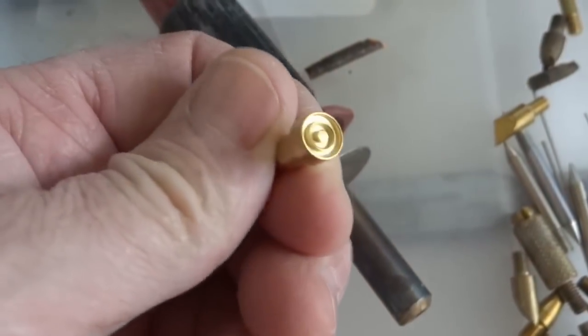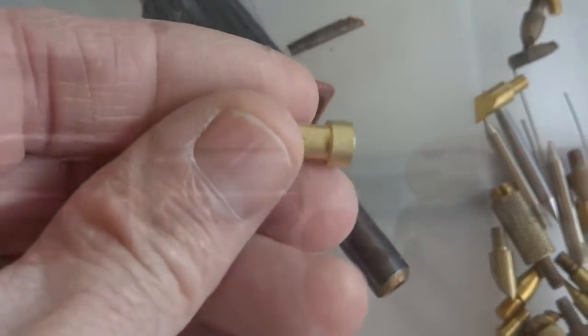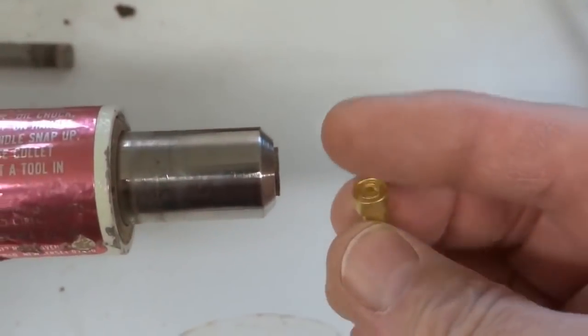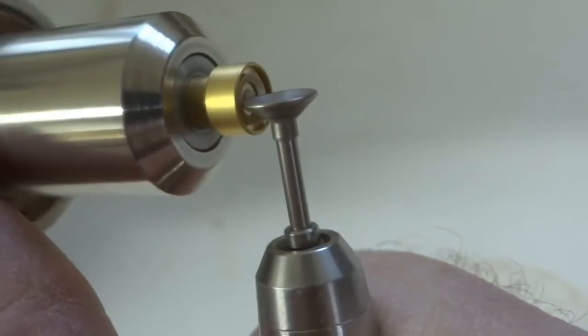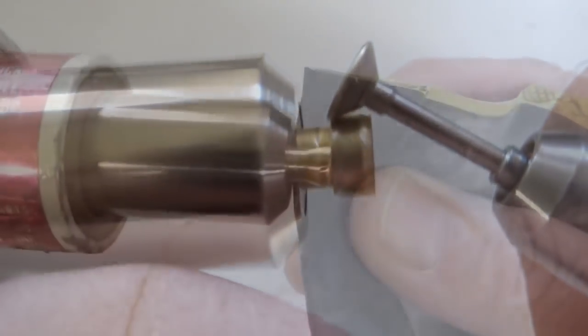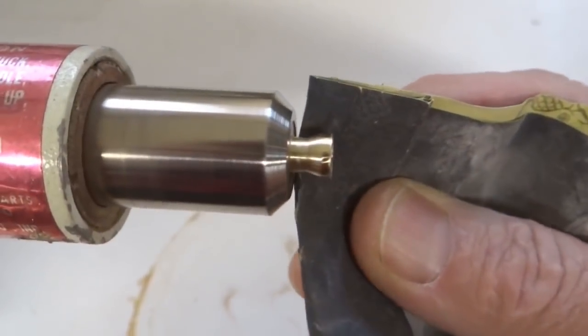It comes with an assortment of brass tips which can be customized. Here I'm creating a burning tip to round out the eyes and give them a smooth surface. I use a hand piece with diamond burrs to grind it into shape.